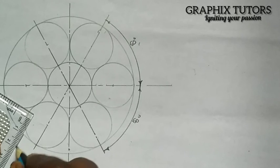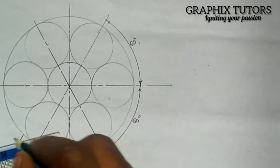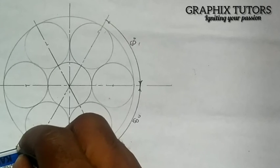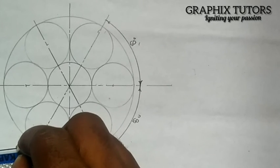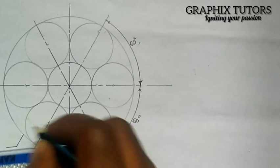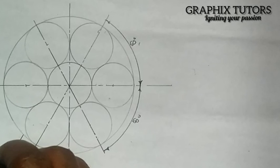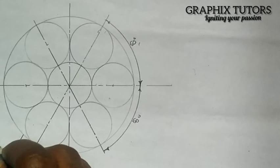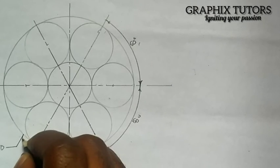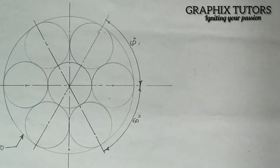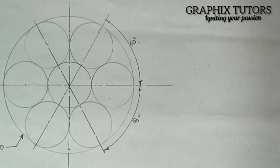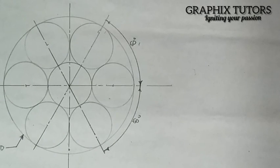The diameter of the outer circle is 90. Thank you very much, I hope this video was helpful. Don't forget to click on the subscribe button.